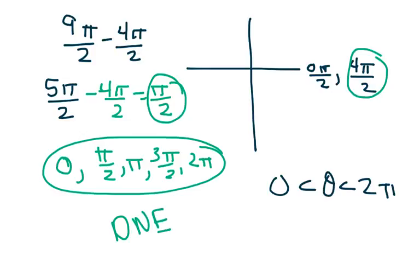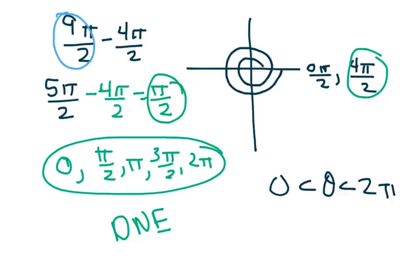Just for drawing purposes, 9 pi over 2 looks like 2 pi plus another 2 pi plus pi over 2 — that's 9 pi over 2.